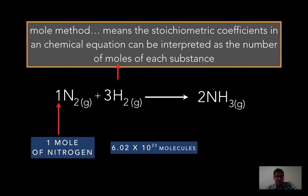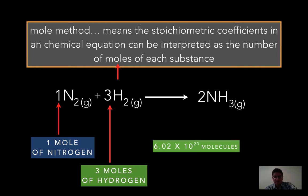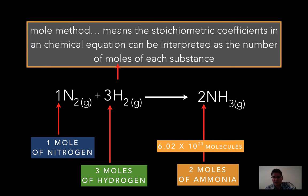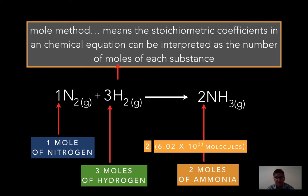Theoretically, for this combination of elements in this chemical equation, you're going to have one mole of nitrogen — that coefficient of one represents one mole of nitrogen, meaning 6.02 × 10²³ molecules. The coefficient 3 means there are 3 moles of hydrogen, so you multiply Avogadro's number by 3. On the product side, there are 2 moles of ammonia, meaning 6.02 × 10²³ multiplied by 2. So the stoichiometric coefficients represent the number of moles of each substance.